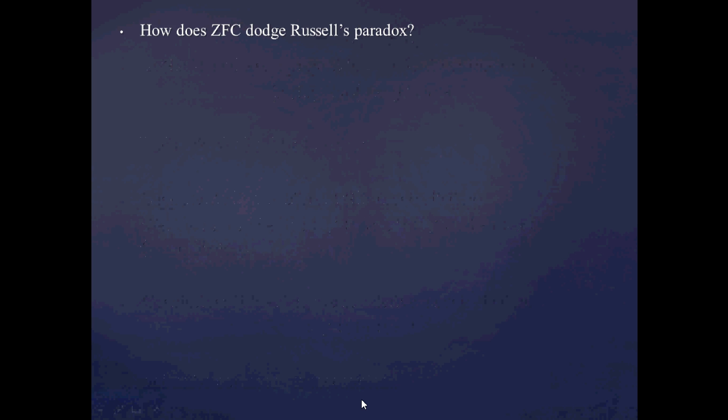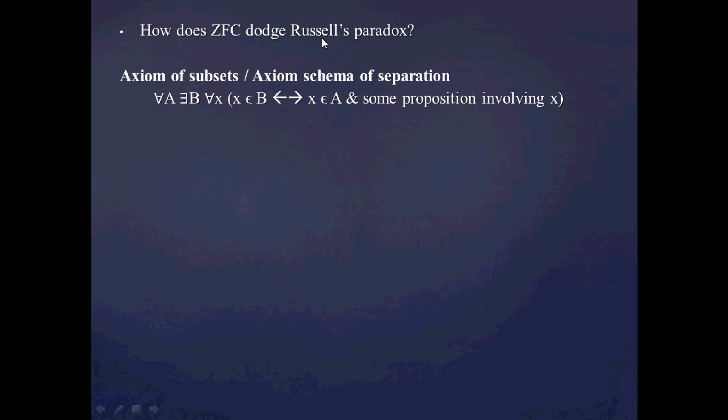So basically, in ZFC, how do you dodge this paradox? Because really, the historic motivation for ZFC was to get rid of this paradox or basically say that these pathological sets can't really exist, or they can't really exist in the way I just described. So how do you dodge this paradox?